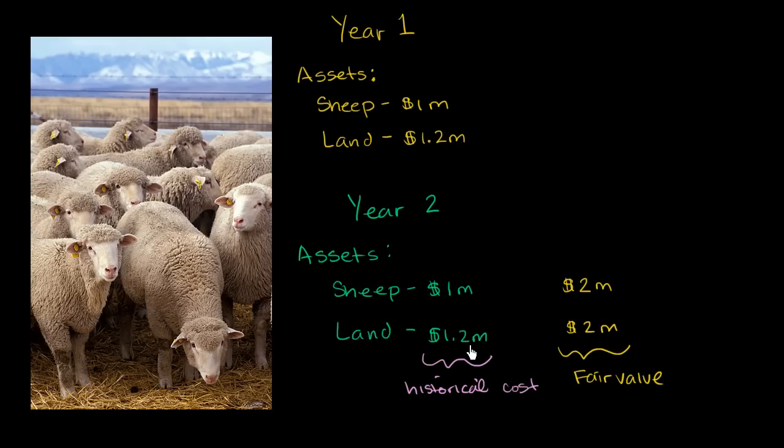So that's the difference. Historical cost is how much you paid for it. Fair value is what the current market value is today. It sounds like fancy words, but it's a pretty simple idea.